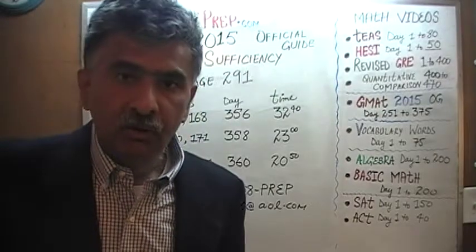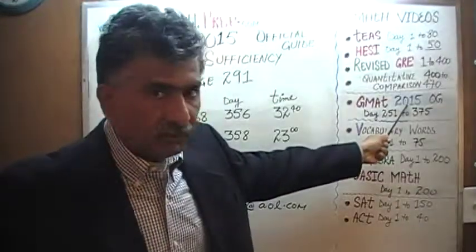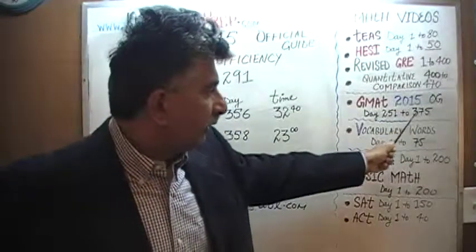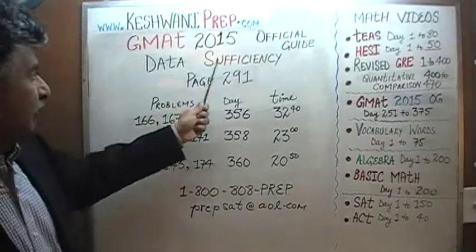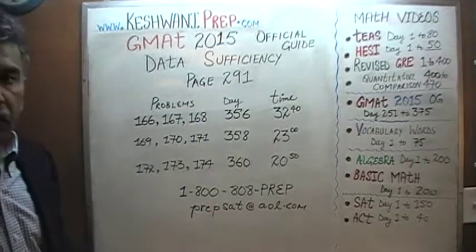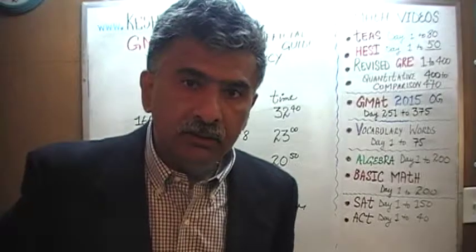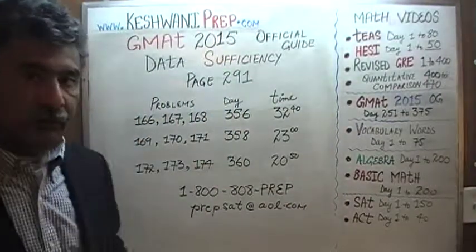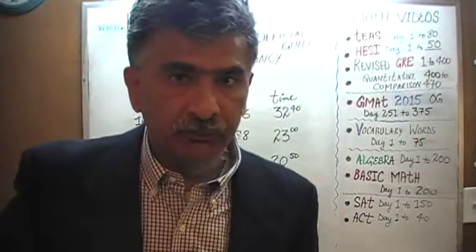You will find solutions to all the math problems appearing in the 2015 Official Guide from day 251 through 375. All the data sufficiency questions are even numbers and all the problem solving questions are odd numbers.